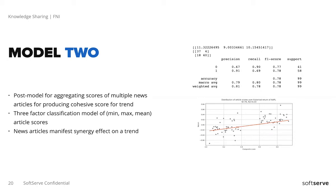We decided to infer the trend prediction from all articles published on the same day. For this purpose, we aggregate them and build another model that takes the neural network scores and produces one single composite score. We also removed all uncertainty — articles scoring around 0.4 to 0.6 that don't contribute to explaining anything. We took the minimum, maximum, and median article scores. We observed a significant boost in model performance. For Tesla, we managed to achieve as high as 0.95 F1 score, which is enormous — nobody expected it. We saw there must be something wrong with our models because it's just unbelievable.